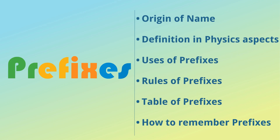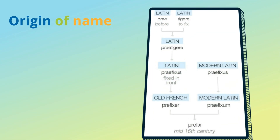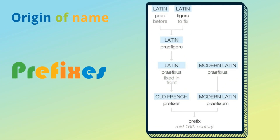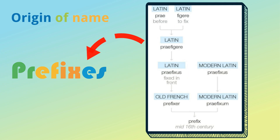Prefix. Origin of name: the word prefix is originated from two Latin words, 'pra' and 'figia'. Pra means before, figia means to fix. So prefix means fixed in front.